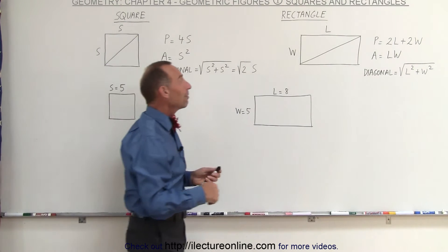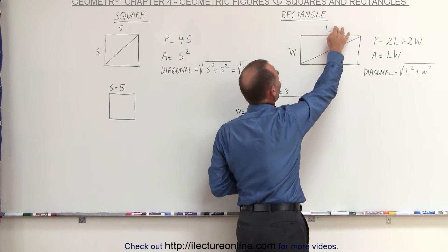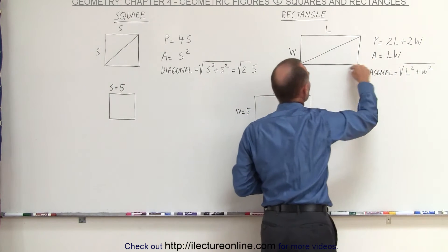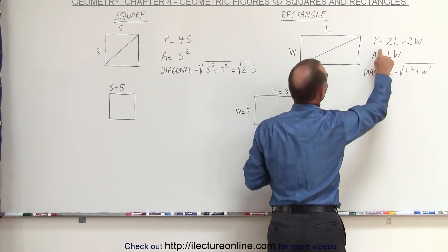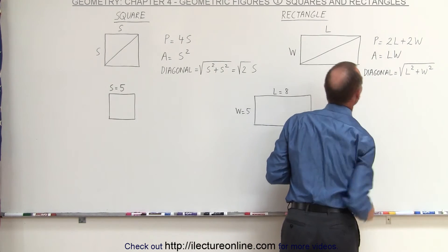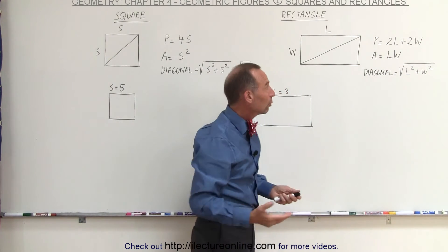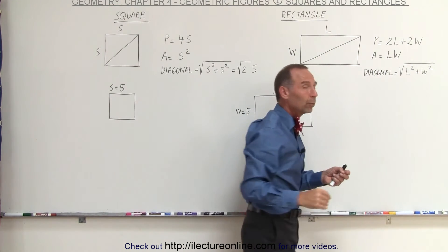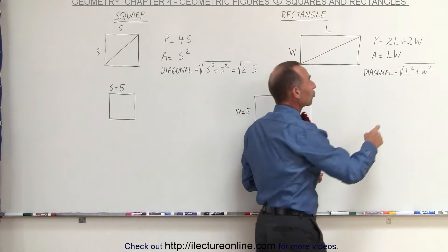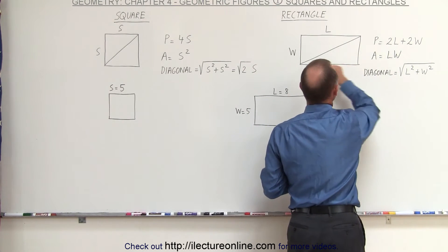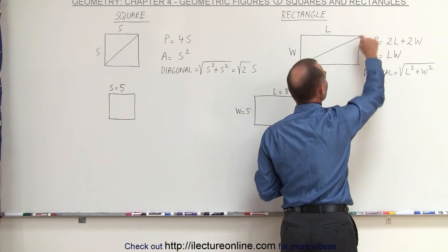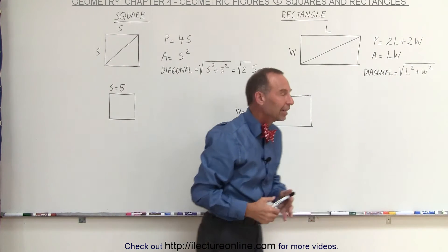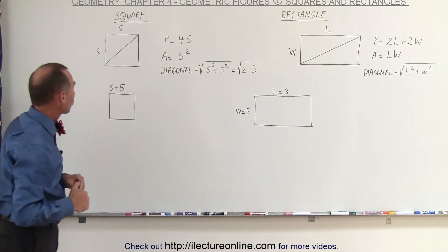For rectangles, we have a long side and a short side. We call the long side the length and the short side the width. The perimeter, as we go around the rectangle, will have two lengths and two widths, so the perimeter equals twice the length plus twice the width. To find the area, we simply multiply the length times the width. To find the diagonal, just like with the square, it's the square root of the length squared plus the width squared, and we cannot simplify it further.